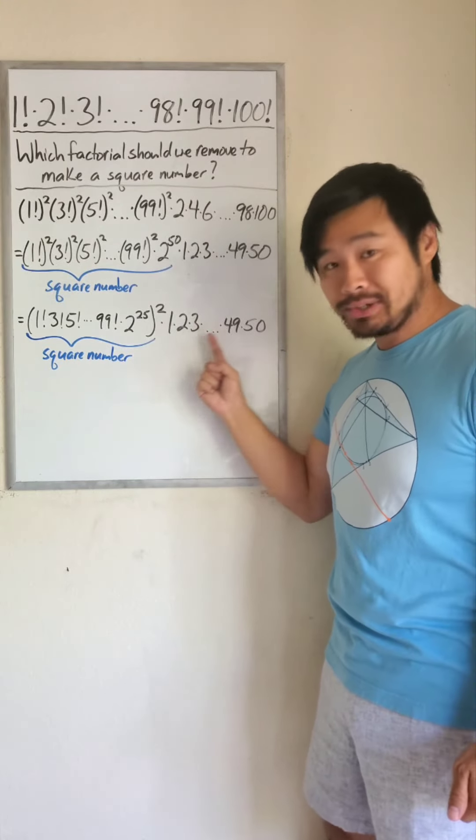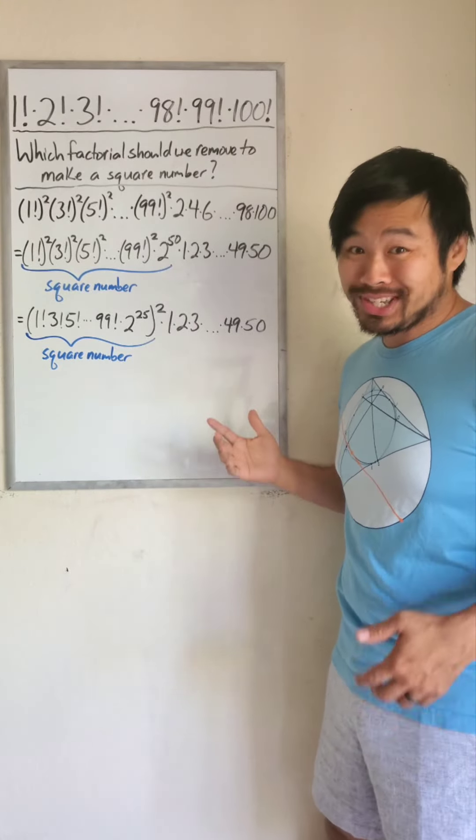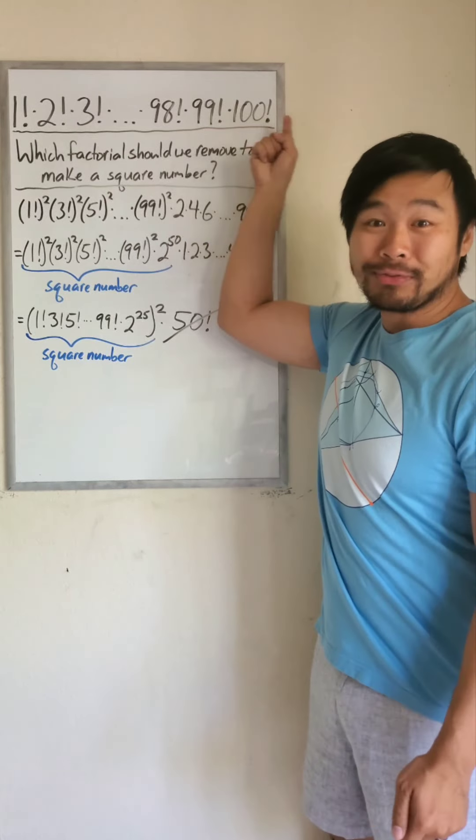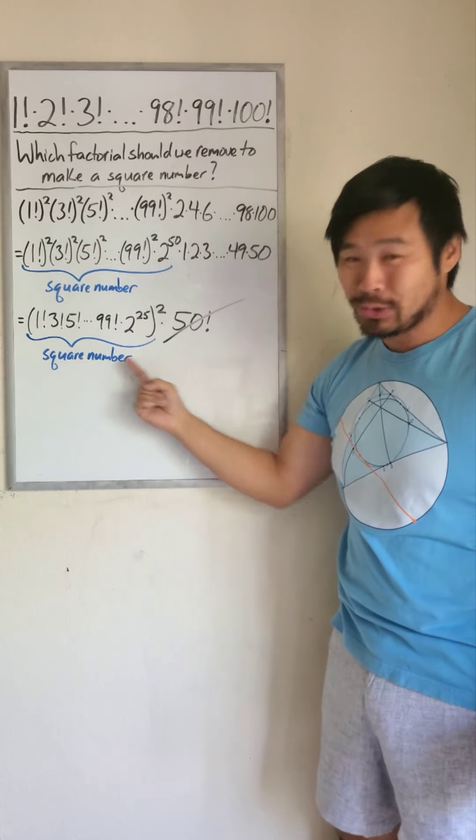Now what's remaining is 1 times 2 times 3 all the way to 50, which is the same thing as 50 factorial. So if we remove 50 factorial from this number, we will have a square number.